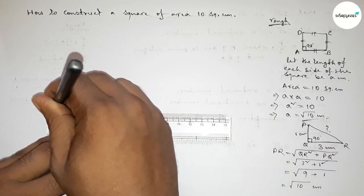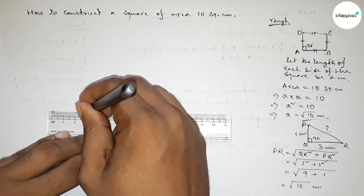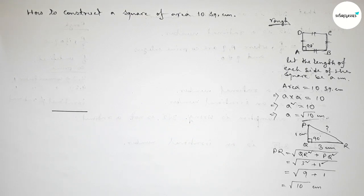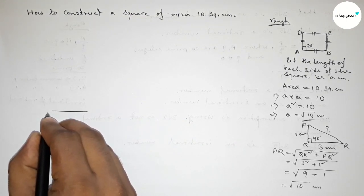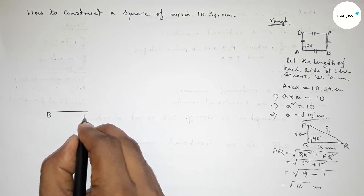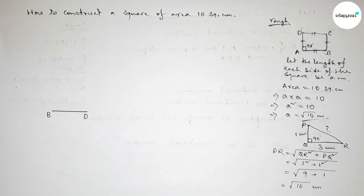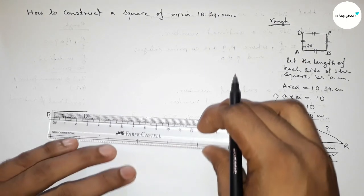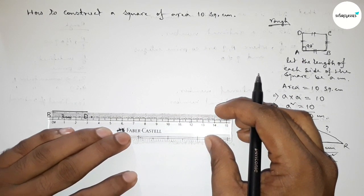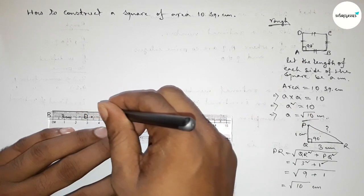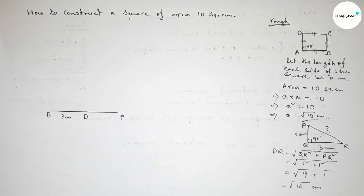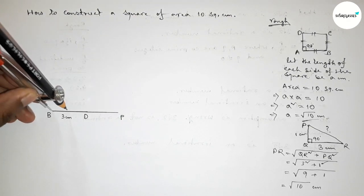Now for the actual construction: drawing a line of length 3 centimeters, taking point B at one end and point D at the other, so BD equals 3 centimeters. We then extend this line and take a point P beyond D.